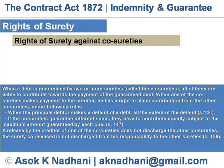Rights of surety against co-surety. When a debt is guaranteed by two or more sureties, called co-sureties, all of them are liable to contribute towards the payment of the guaranteed debt. When one of the co-sureties makes payment to the creditor, he has a right to claim contribution from the other co-sureties. If the co-sureties guarantee different sums, they have to contribute equally subject to the maximum amount guaranteed by each one. A release by the creditor of one co-surety does not discharge the other co-sureties, nor is the released surety discharged from responsibility towards the other sureties.